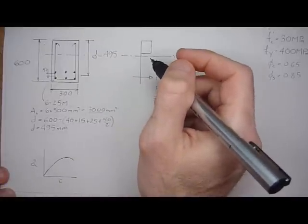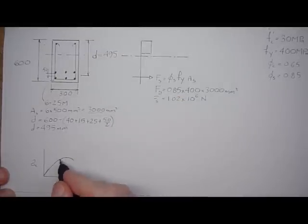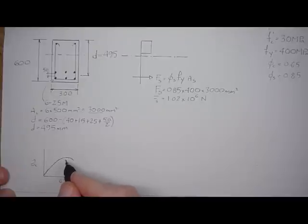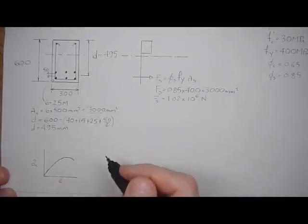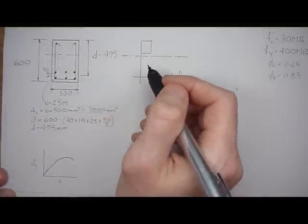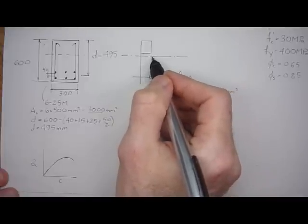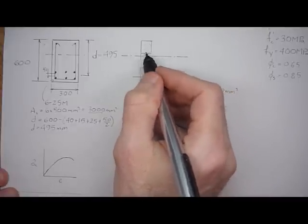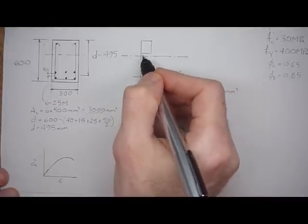So if we were to look at the stresses in this section as a function of strain, it really would kind of have this kind of a shape to it. But in design, it would take too long to keep going back and forth and recomputing strains and corresponding stresses. So we use an equivalent stress block approach. And that's why it doesn't coincide with the neutral axis and why it's rectangular as opposed to a parabolic distribution.